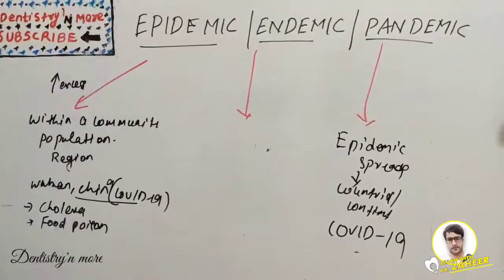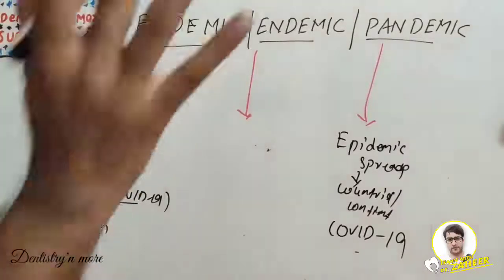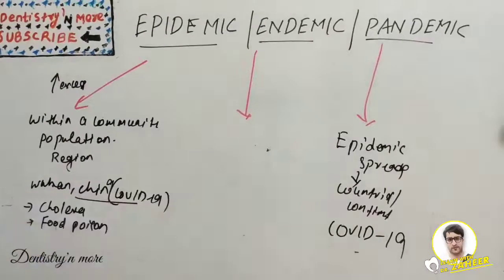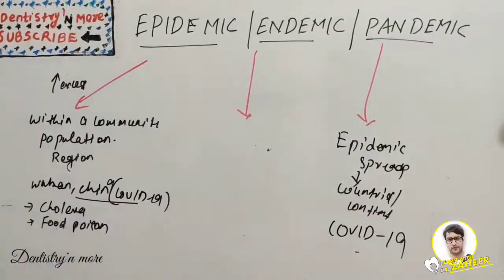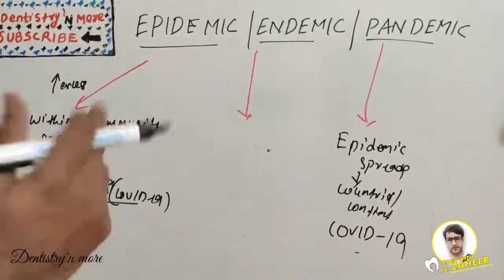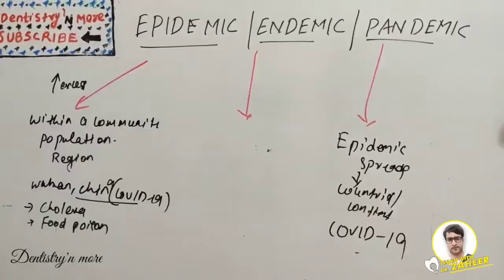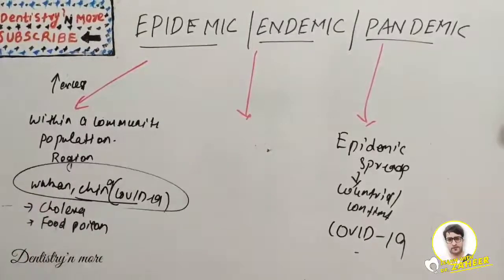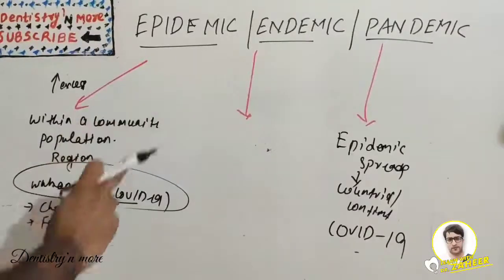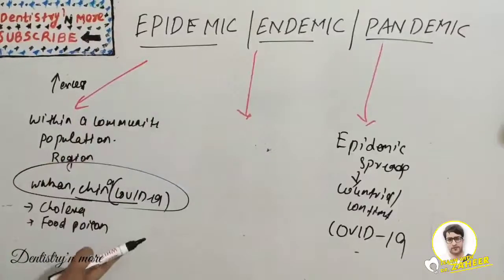When that spread extends globally — to many countries and continents — it becomes a pandemic. So to summarize with a relatable example: COVID-19 was an epidemic when it was first reported in China, and then it became a pandemic.